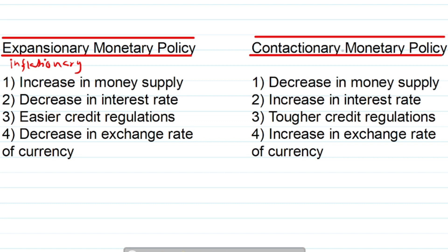Contractionary monetary policy, on the other hand, is used to decrease aggregate demand in the country, and this policy is also known as deflationary monetary policy because it causes deflation or a fall in the price level in the country. Now moving to the expansionary monetary policy and looking at each tool.